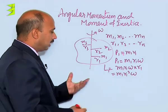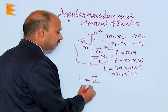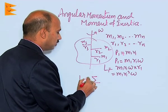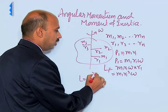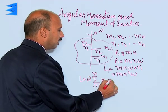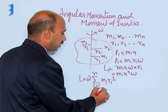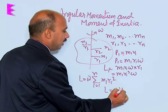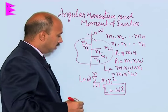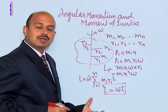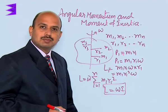The total angular momentum of the body can be written as L equals omega times the summation from i equals 1 to n of mi·ri², which gives L equals I·omega. This is the relation between angular momentum and moment of inertia.